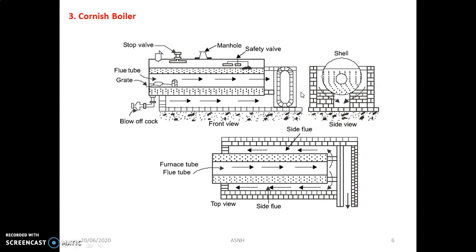The products of combustion pass from the fire grate forward over the brickwork bridge to the end of the furnace tube. They then return by the two side flues to the front end of the boiler and again pass to the back end along the bottom of the boiler to the chimney. This return path is the main specialty of the Cornish boiler, where combustible gases pass through and return again from the back section.